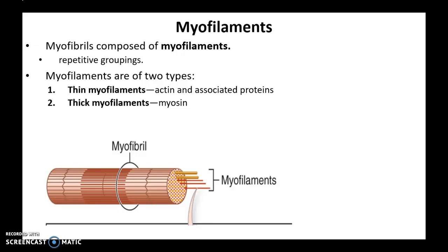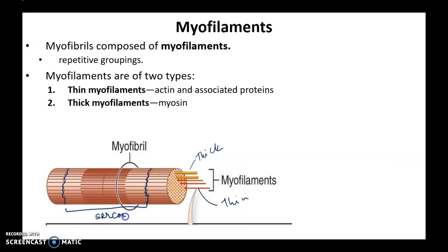Myofibrils are composed of myofilaments. As mentioned before, myofilaments are made up of thick and thin proteins. The thick proteins are shown in yellow and the thin proteins in red. The thick and thin filaments are organized into a specific structure called a sarcomere. Within a myofibril you will see repeating units of sarcomeres, each with thick and thin filaments organized in a specific pattern.